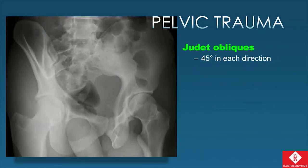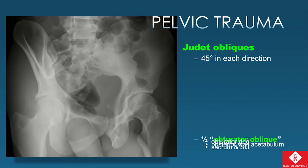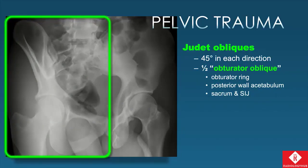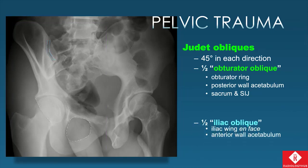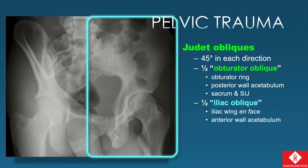The oblique Judet views are approximately 45 degrees in each direction. Each oblique view has two images the orthopedic surgeons like to review. One half is referred to as the obturator oblique because we see the obturator ring coming right at us — from this view we can see the posterior wall of the acetabulum as well as the sacrum and SI joint. The other half is referred to as the iliac oblique because we see the iliac wing facing us, allowing visualization of the anterior wall of the acetabulum.